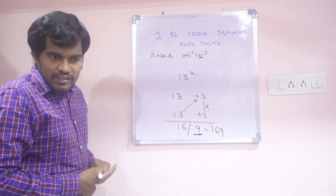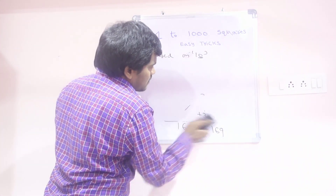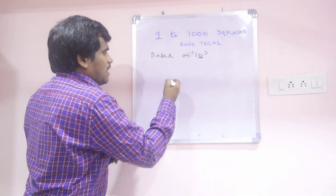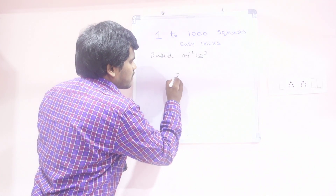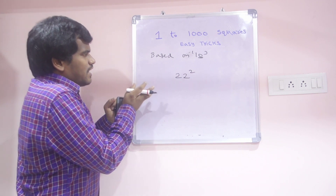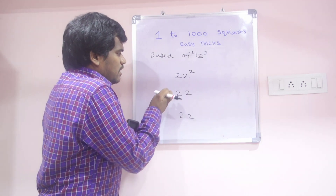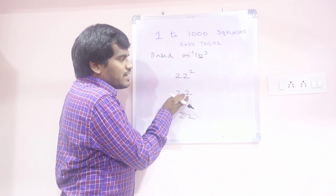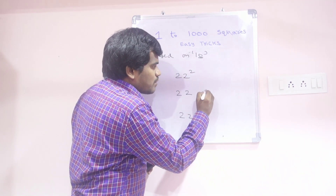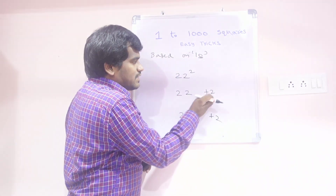Another example — 22 square. 22 times 22. This 22 is near to 20. But we are discussing based on 10 first. How much more than 20? Plus 2, plus 2. 22 is 2 more than 20, that's why I am doing plus 2.